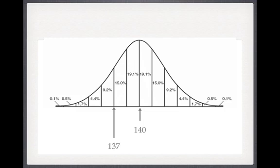So, if we assume the null hypothesis to be true — that the distribution of those taking Sodibind is the same as the distribution of the general population — then 15.9% of the general population would have a lower serum sodium level than our friend. Does that support our null hypothesis? The fact that nearly 16% of the normal population have a lower sodium level than our friend doesn't convince me that Sodibind has made a difference. So in this situation, I would accept the null hypothesis that both distributions are, in fact, the same.